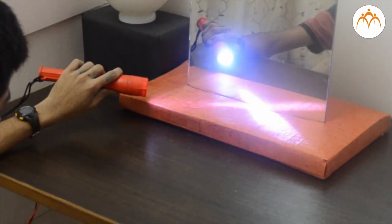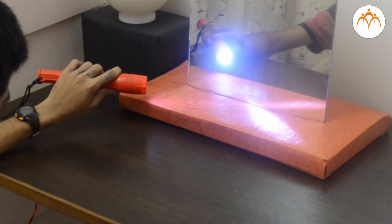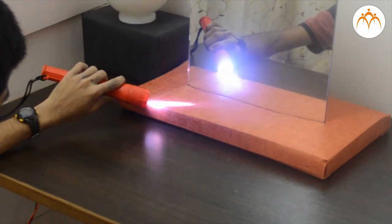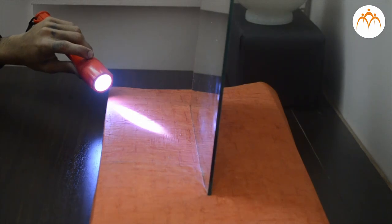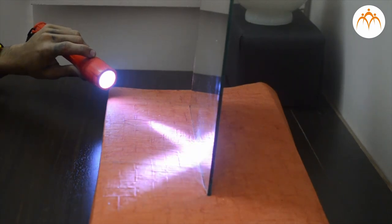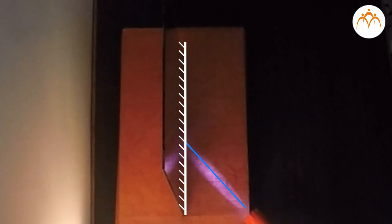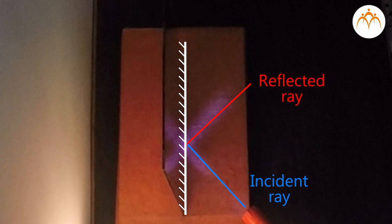If a ray of light could be observed approaching and reflecting from a flat mirror, then the behaviour of the light as it reflects would follow a predictable behaviour known as the law of reflection. I will project this light on the mirror. It comes back in this direction. This projected light is called an incident ray. The light which bounces back from the mirror is called reflected ray.